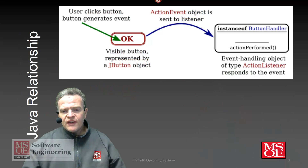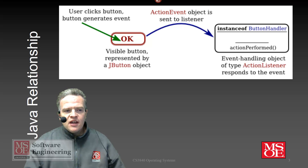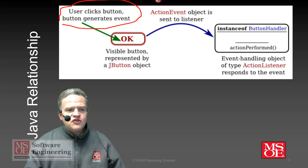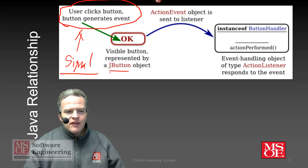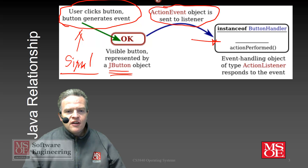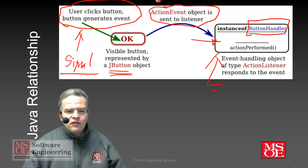You can think of a signal as being somewhat similar to an event listener set up in Java. In Java, a user clicks on a button generating an event — we can think of this as being a signal. That button is a JButton object, and an ActionEvent object is sent to the listener, which implements a button handler. In our case, instead of having a button handler, we have something called a signal handler.